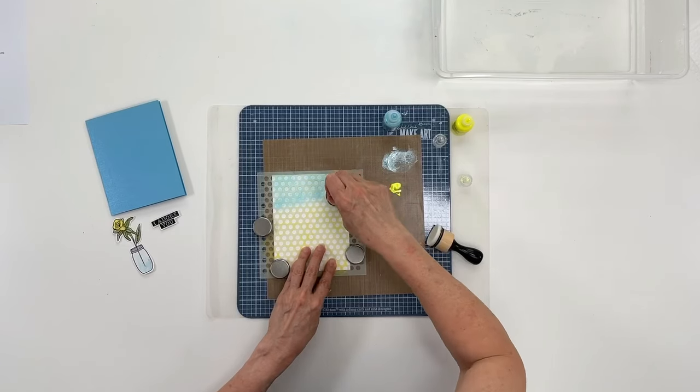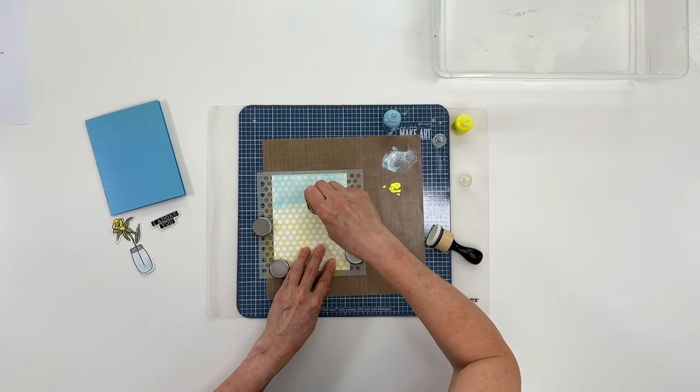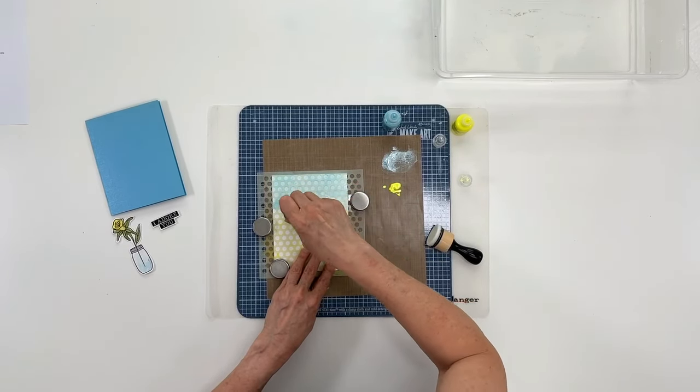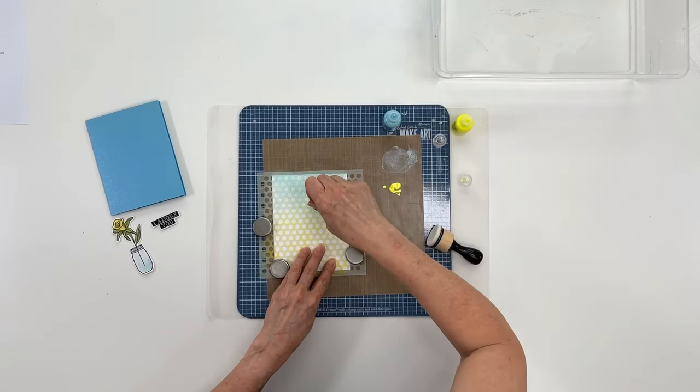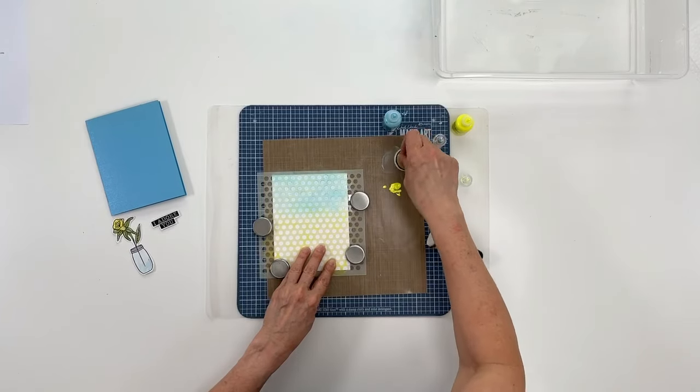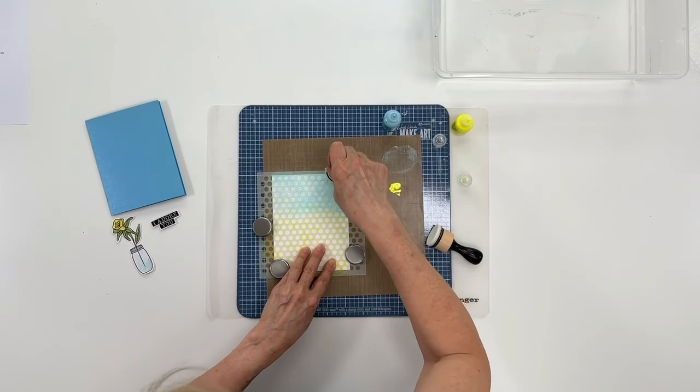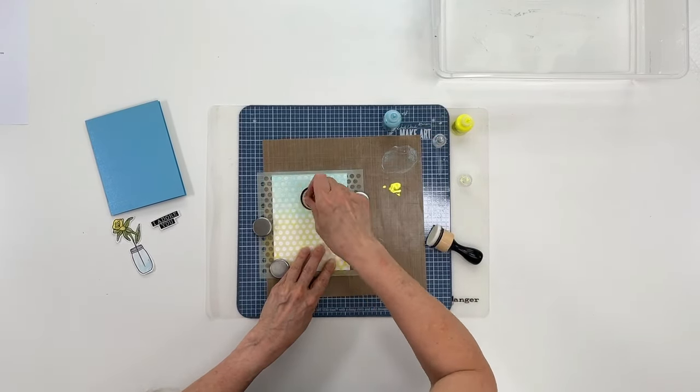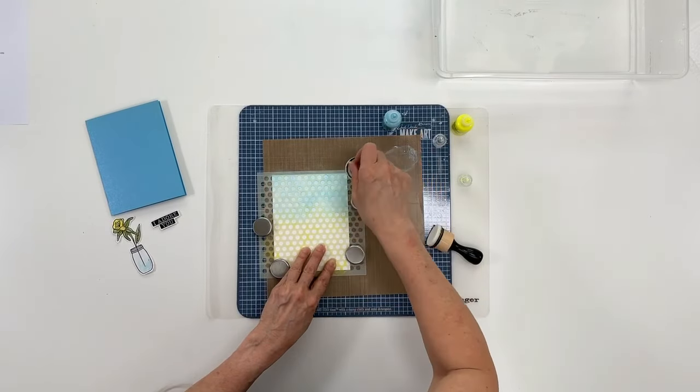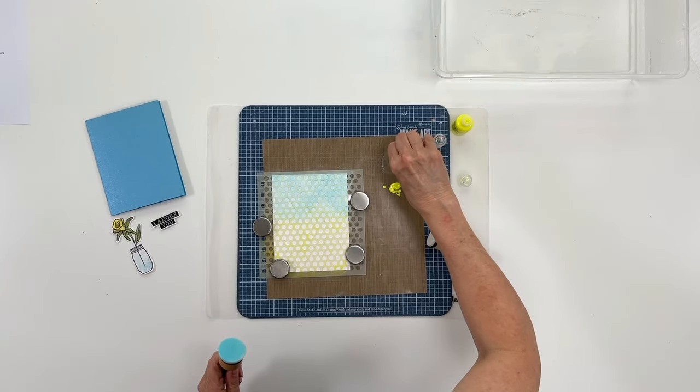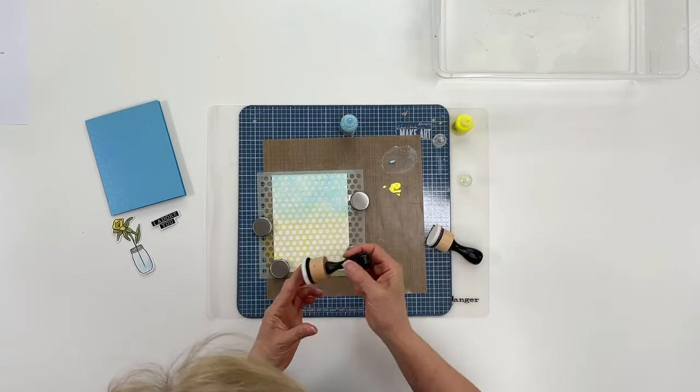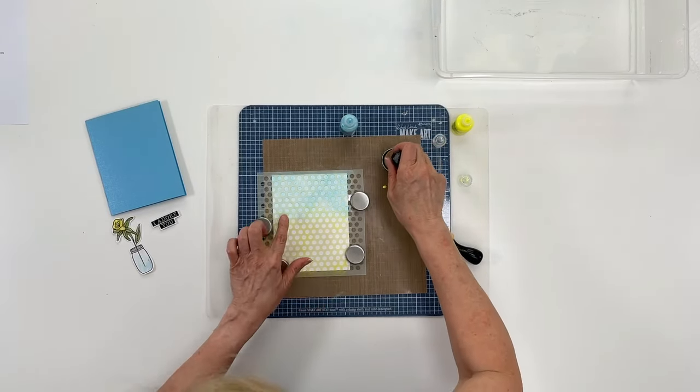I'm going to go about a third of the way down with this color until I get the right look. You can always come back to it if you decide you want to add more. I'm going to add a little bit more. I need to get darker on this side over here. I think that's good for now.